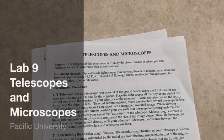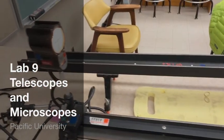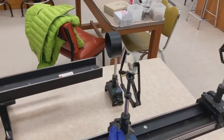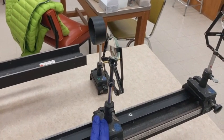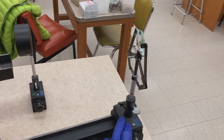Welcome to Lab 9, Telescopes and Microscopes. For this setup, we'll have the light source all the way at one end of the optical bench, an objective lens—this is the plus 5 diopter lens—and an eyepiece lens, the plus 17 diopter lens.